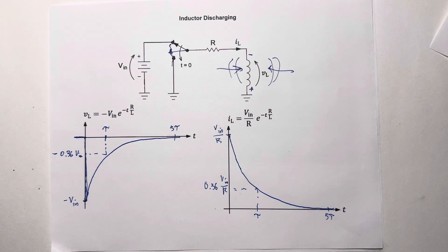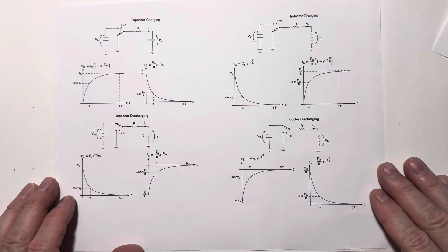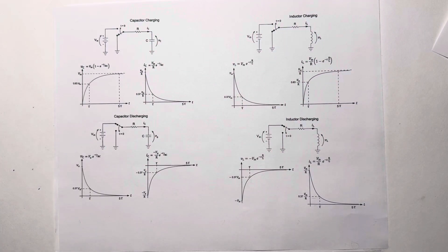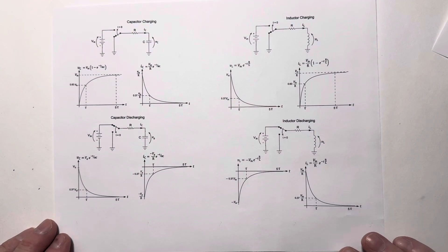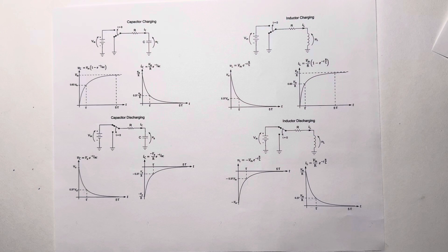Hopefully this wasn't too confusing and I didn't move too quickly. I'm going to finish with just a summary of all these waveforms and the charging and discharge configurations of the switches — you might want to get a screen capture of this or find it in another reference. This is as much as I need to say about capacitors and inductors in the time domain for right now. We're going to be moving on into the frequency domain in the next video, which I think is more applicable to the applications we'll be looking at in the future. That's all for now, and I'll see you next time.